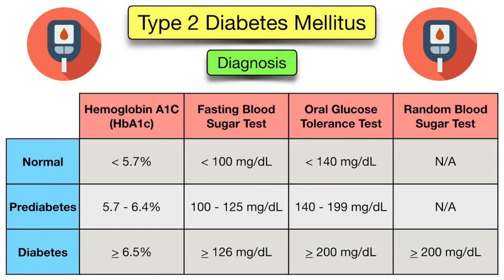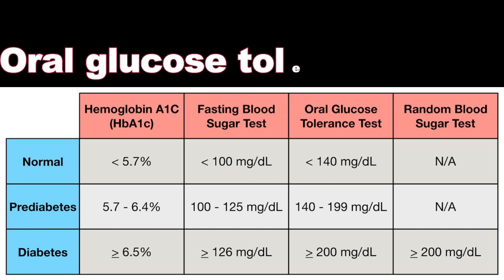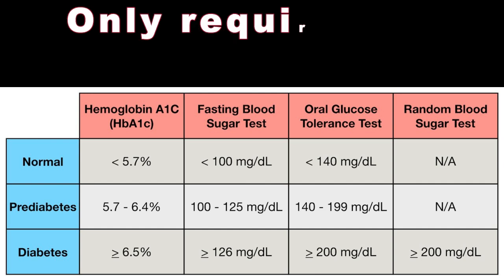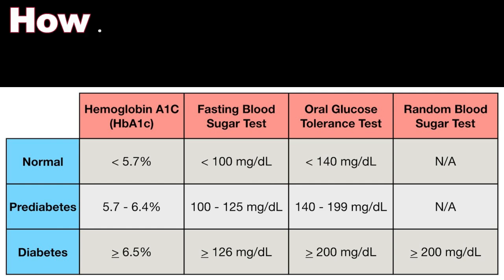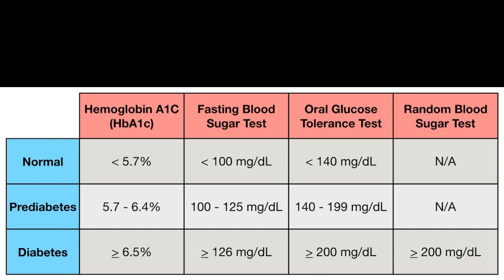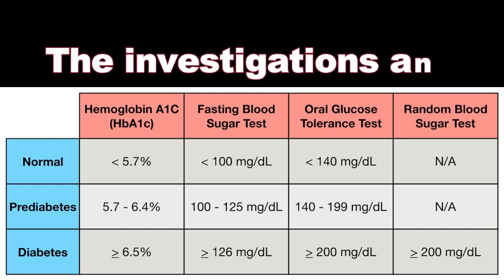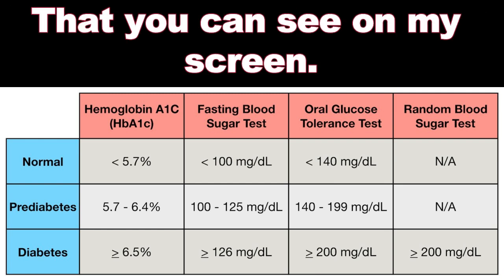Let's talk about diagnosis and tests for type 2 diabetes. Diagnosis involves measuring blood glucose levels through one of the following: HbA1c, fasting blood glucose test, oral glucose tolerance test, or random blood glucose test. Patients with symptoms may only require one test to confirm diagnosis, while patients without symptoms typically require two separate investigations on different occasions, both confirming the diagnosis. The investigations and outcomes are shown in the table on screen.